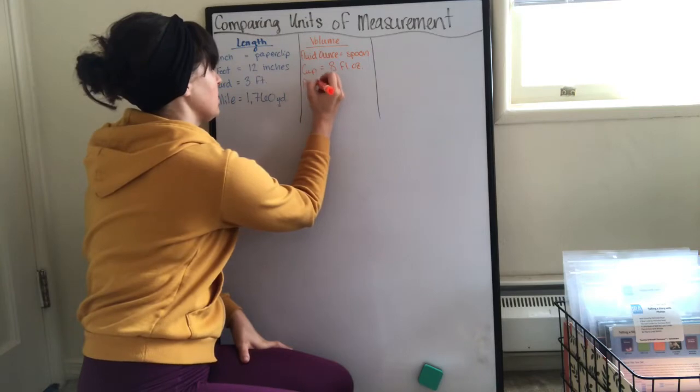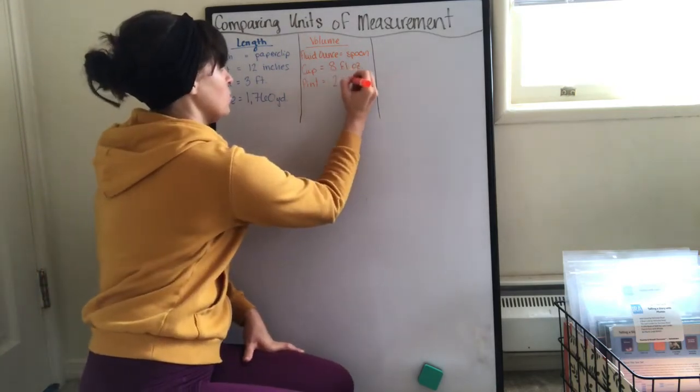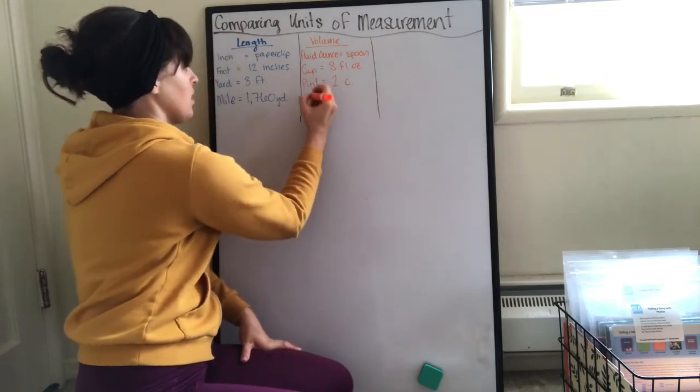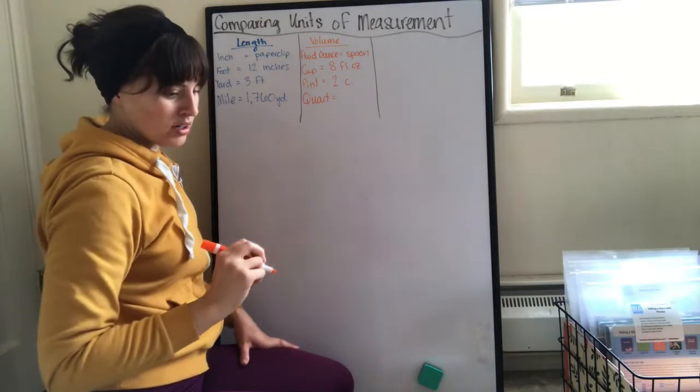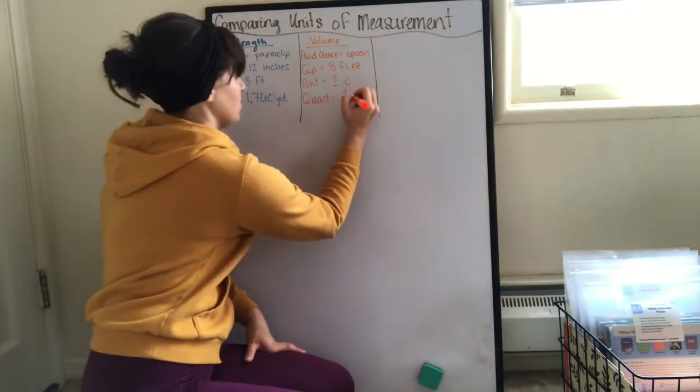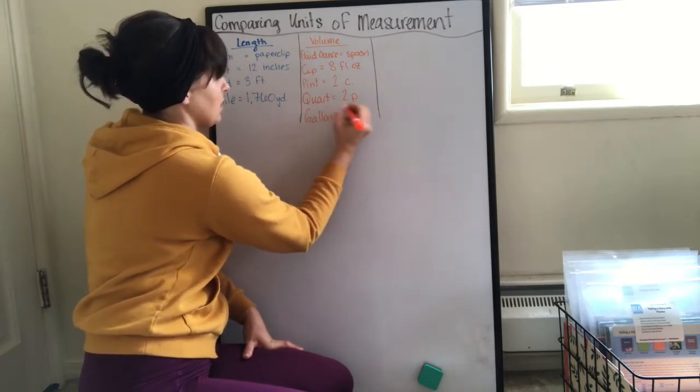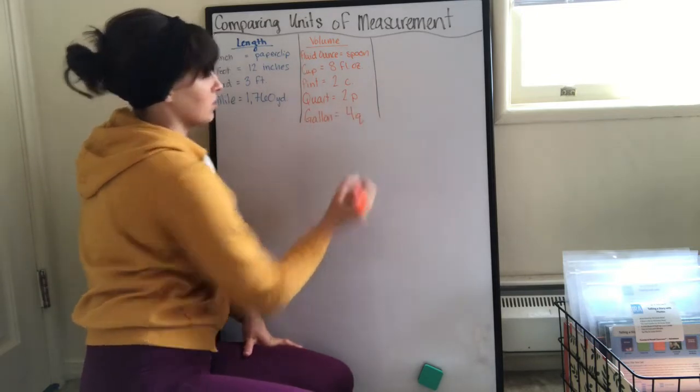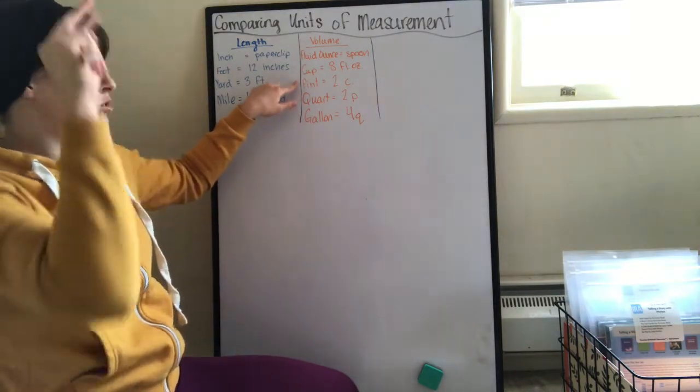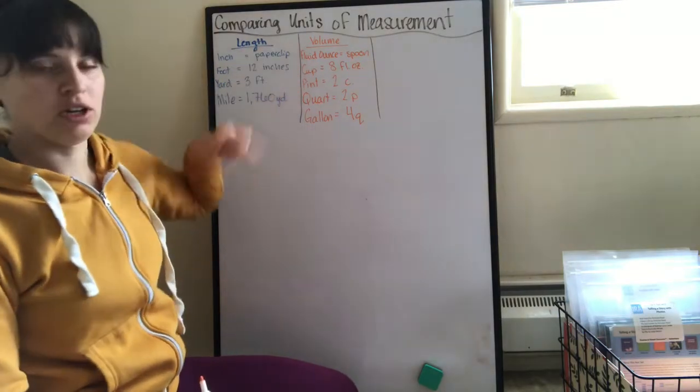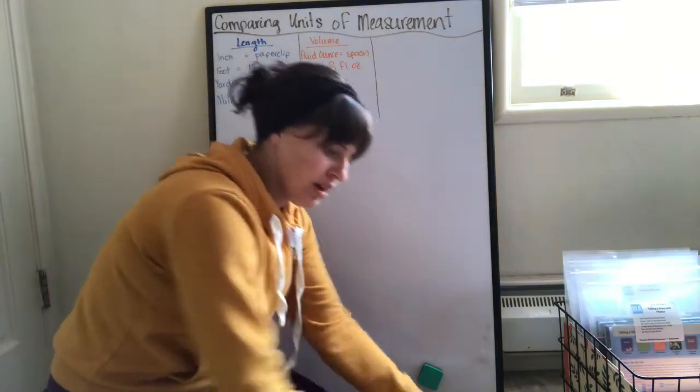Then we have a pint. One pint is two cups. Then we have a quart. One quart is two pints. Then we have a gallon, and one gallon is four quarts. Remember we had that big G and then in there we had four quarts and each quart we have two pints and each pint we have two cups.